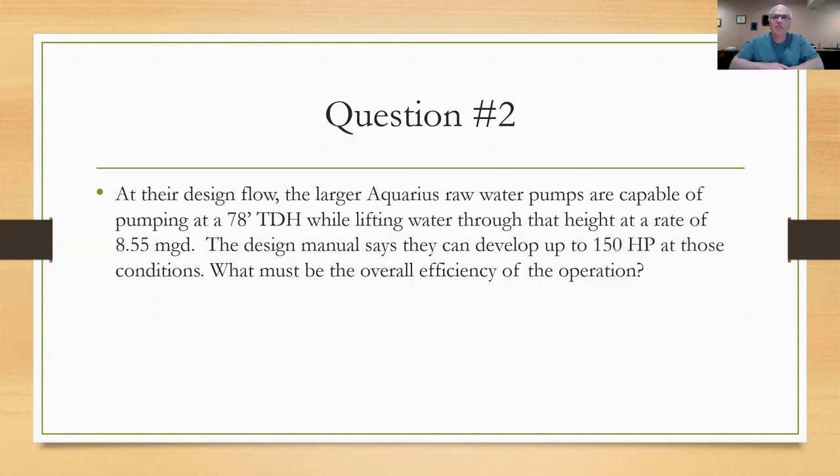This question is saying that at the design flow, the Aquarius water treatment plant has five pumps, five of them down there, that are capable of pumping at a head of 78 feet. When they lift water through that height, they're operating at a rate of 8.55 MGD. There are five pumps down there. Three of them are 8.55. There's two others that are smaller. So what they're saying is there's one of the big ones operating and it's developing 78 foot of total dynamic head. If the design manual says they can develop up to 150 horsepower at those conditions, what must the overall efficiency be of that operation? We know from a previous formula that we used in one of our hydraulic series that the horsepower equals gallons per minute times the feet of head divided by 3960 and the efficiency of the system. If you want to stop here and work that through, go ahead, stop the video. Otherwise, I'm going to move on here.